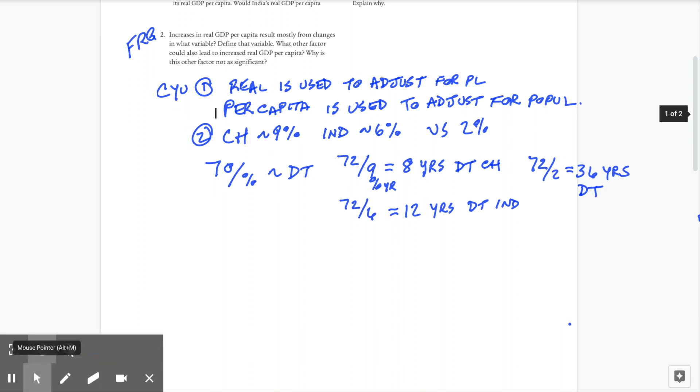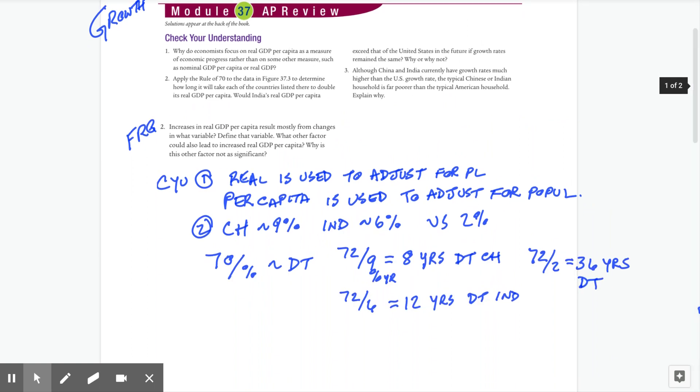And I think this question basically said, would India eventually eclipse that of the United States? Well, yeah, because if this growth rate, 6% continues, eventually it would exceed the 2% growth rates. That's not what a lot of folks would think. The thing is most economies, and in fact, that's actually what the third question up here says, although China and India currently have growth rates much higher, the typical Chinese or Indian household is far poorer than the typical American. Explain why.